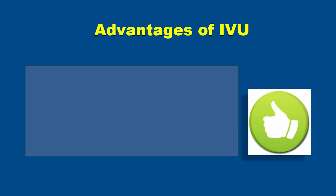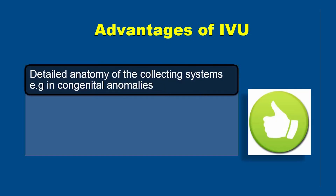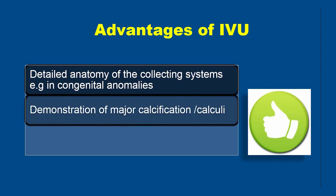There are many advantages of performing an IVU procedure. Detailed anatomy of the collecting system can be seen, for example in congenital anomalies. It can very well demonstrate major calcification and calculi, and the procedure is quite affordable, especially in a country like ours.